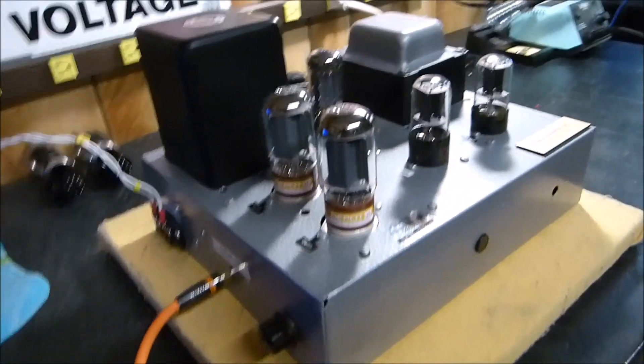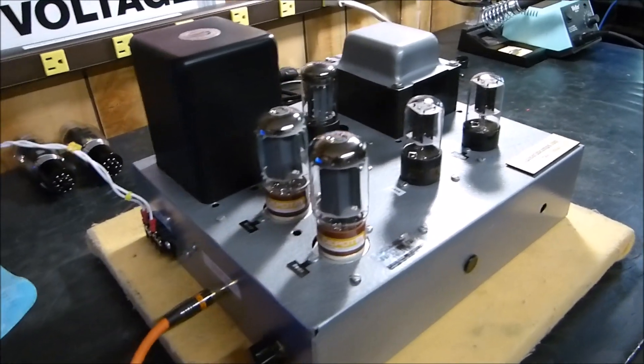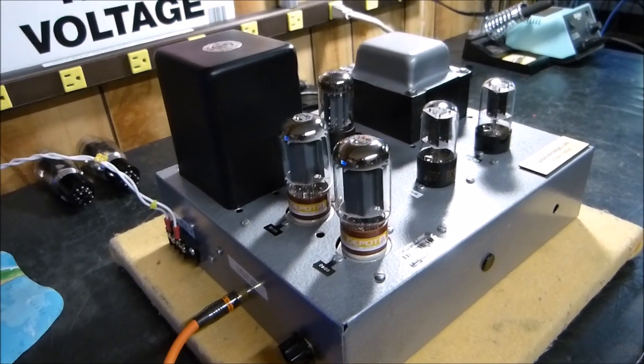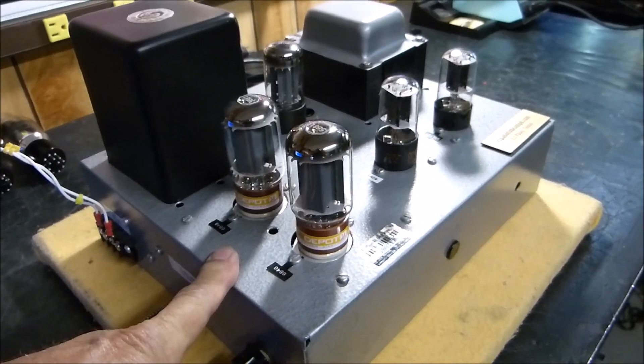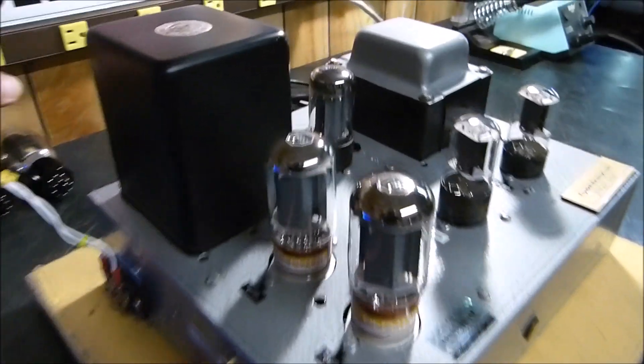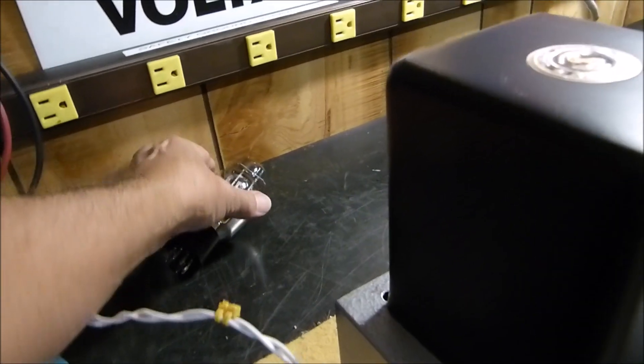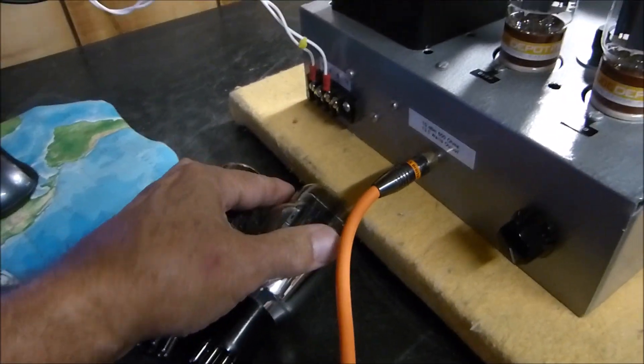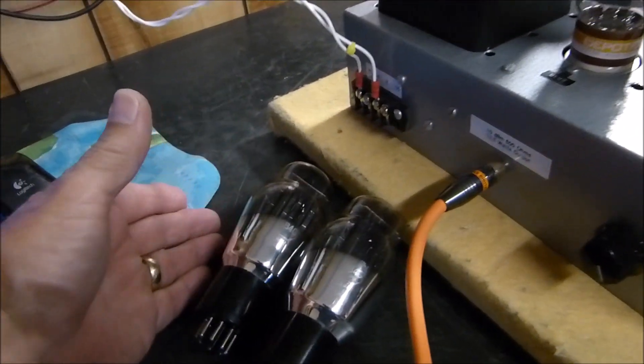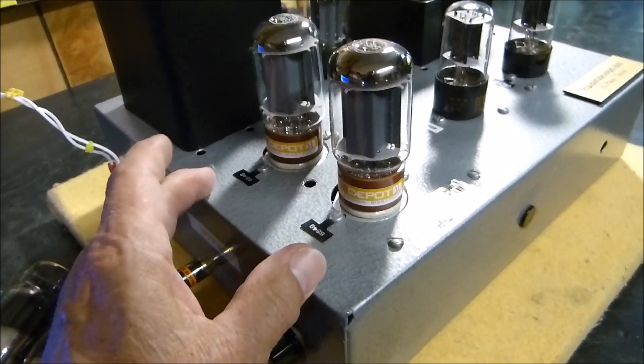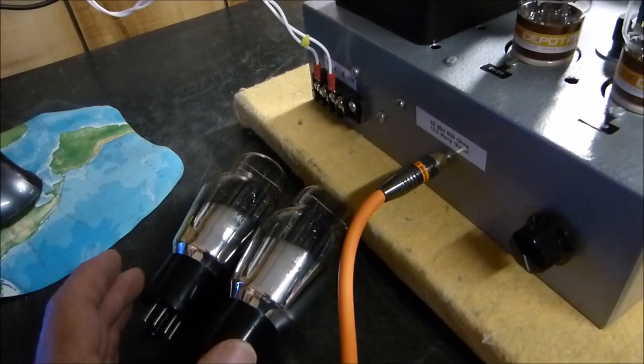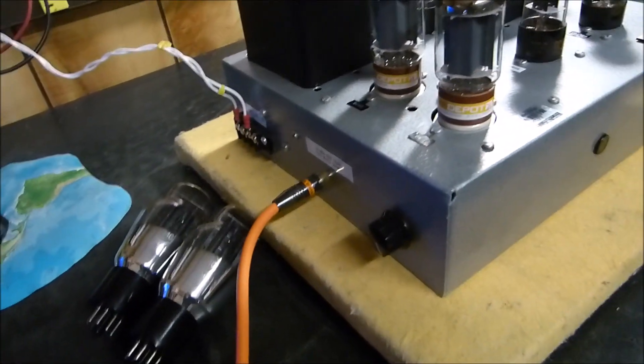I built this amplifier so that it is directly interchangeable between the 5881, 6L6, KT66 style tube and genuine 6B4G. The 6B4 is a directly heated cathode tube. I have two beautiful ones here.